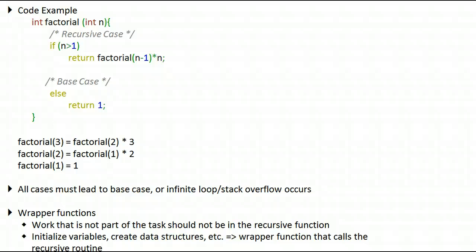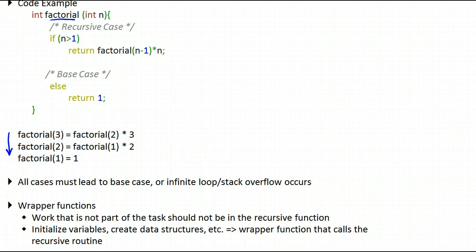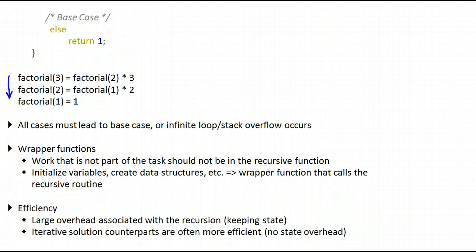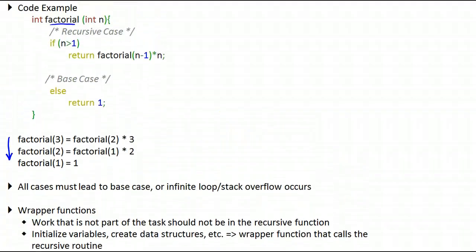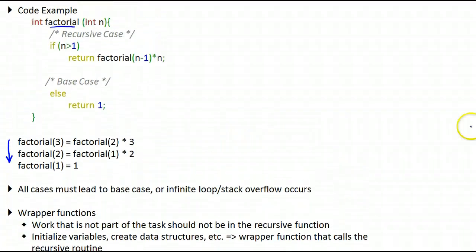In this second part of our video about recursion, we're going to look at a code example of the factorial operation. Then we will walk through one example and talk about some issues that come up with recursion. This is the factorial operation we've seen in the previous video, put in code in C.